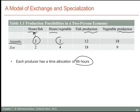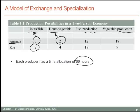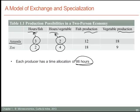To harvest vegetables, Amanda requires two hours. Zoe has different production efficiencies — she appears to be somewhat more efficient in catching fish because she only requires two hours to catch fish. However, she appears to be less efficient than Amanda in harvesting vegetables, because she requires four hours to harvest a basket of vegetables. Given these hour requirements and given that each producer has a certain number of hours available each week, how much fish and how many vegetables could each produce?